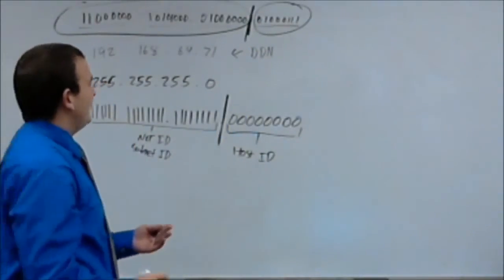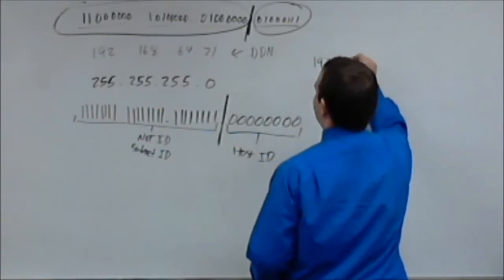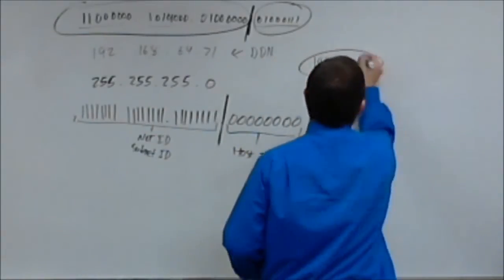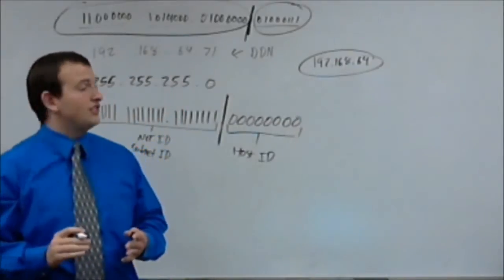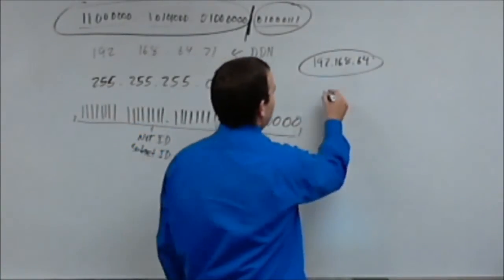So, the network ID in this network would be 192.168.64. That's your network ID. Now, your host ID would be .71.